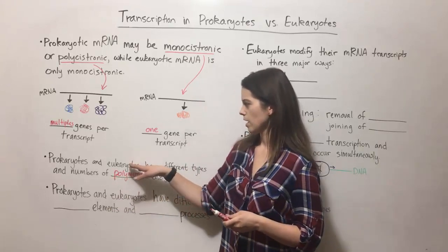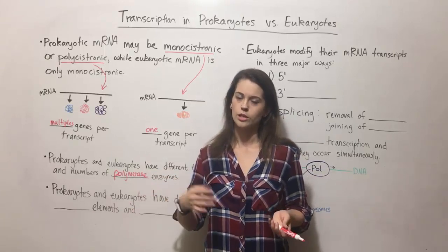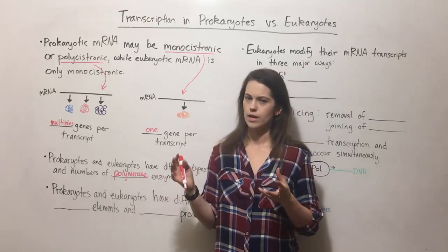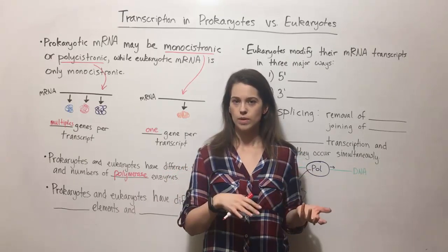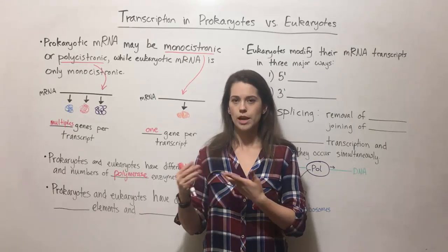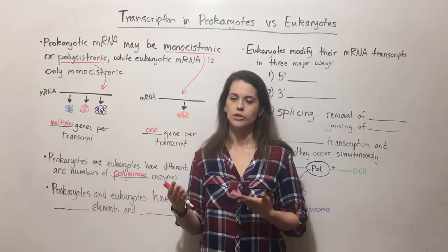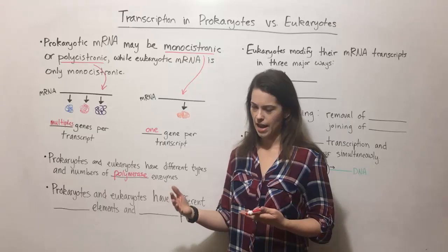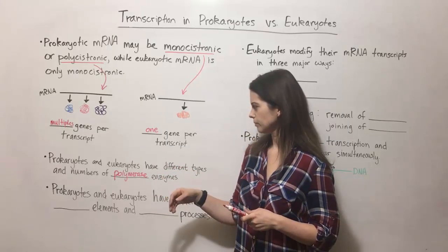Eukaryotes, on the other hand, have three different polymerases known as RNA polymerase 1, RNA polymerase 2, and RNA polymerase 3, and they transcribe different subsets of genes. Specifically, genes for mRNA which go on to be expressed as proteins, genes for tRNAs which carry amino acids to the ribosome in translation, and genes for rRNA which is the RNA that helps make up those ribosomes. All these different types of RNA are transcribed by slightly different polymerases in eukaryotes.